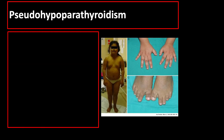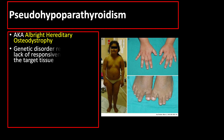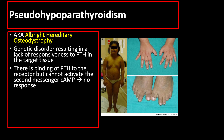Pseudo-hypoparathyroidism, also known as Albright hereditary osteodystrophy, is a heritable disorder resulting in a lack of responsiveness to parathyroid hormone in the target tissue. This results from uncoupling of the parathyroid hormone receptor from adenylate cyclase due to a mutant stimulatory G protein. Parathyroid hormone binds its receptor but cannot activate the second messenger cyclic AMP and thus there is no response. Hence, hypocalcemia develops, although those with pseudo-hypoparathyroidism have markedly elevated levels of parathyroid hormone, representing hormone resistance.